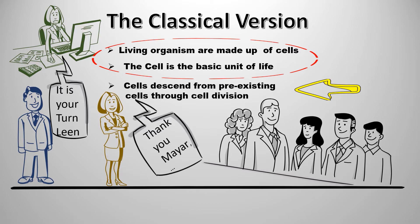A breakthrough was made by a Dutch scientist known as Anton van Leeuwenhoek, who developed a new microscope with a magnification of 300X. Such magnification allowed him, and the scientists after him, to visualize living cells like protozoa, bacteria, and RBCs, as well as sperm cells of animals and humans.